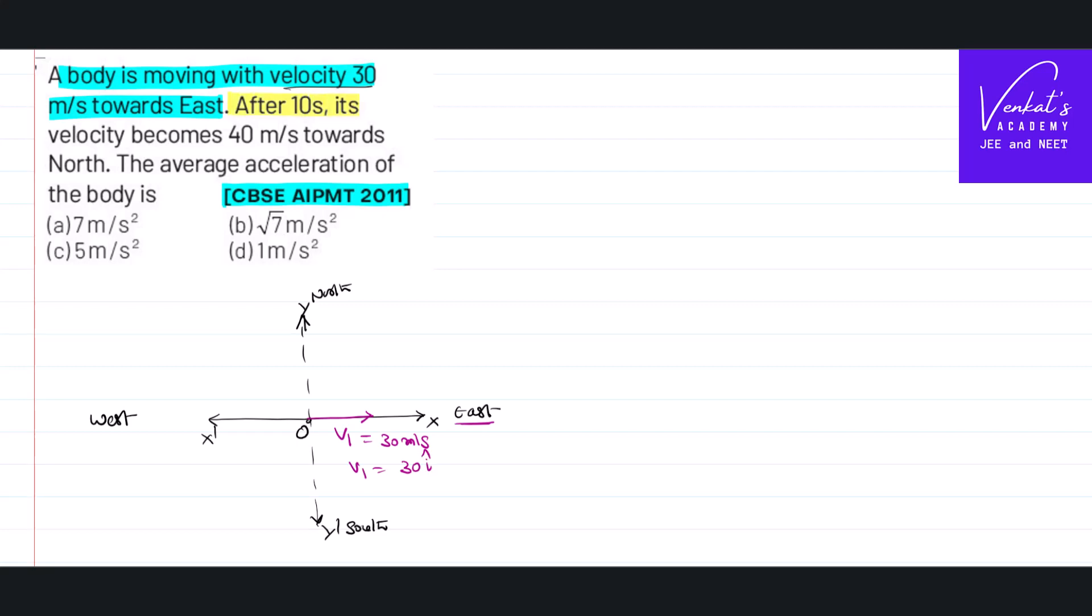What is given next is after 10 seconds, velocity becomes 40 meters per second towards North. Where is that? I have to show that this way towards the North.